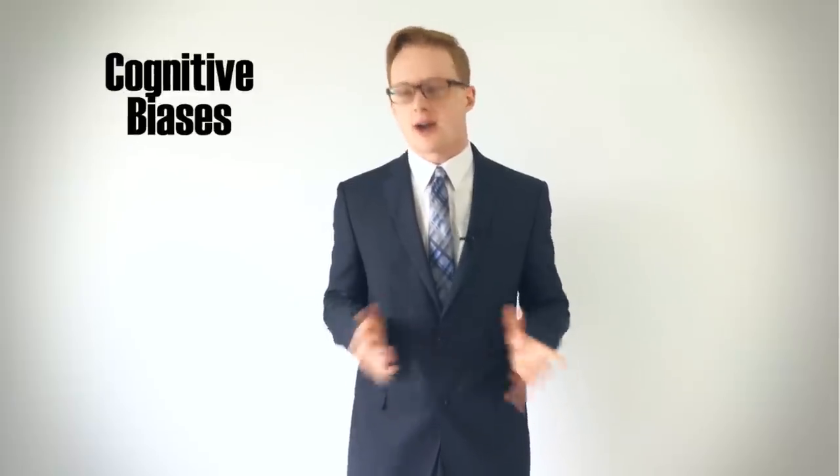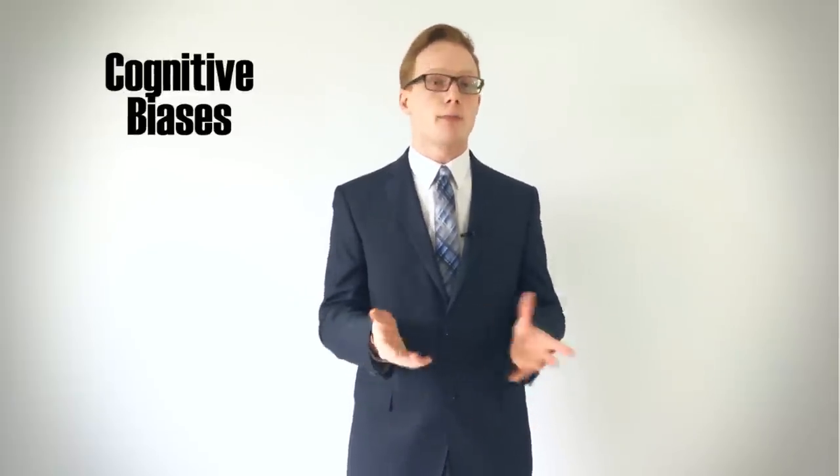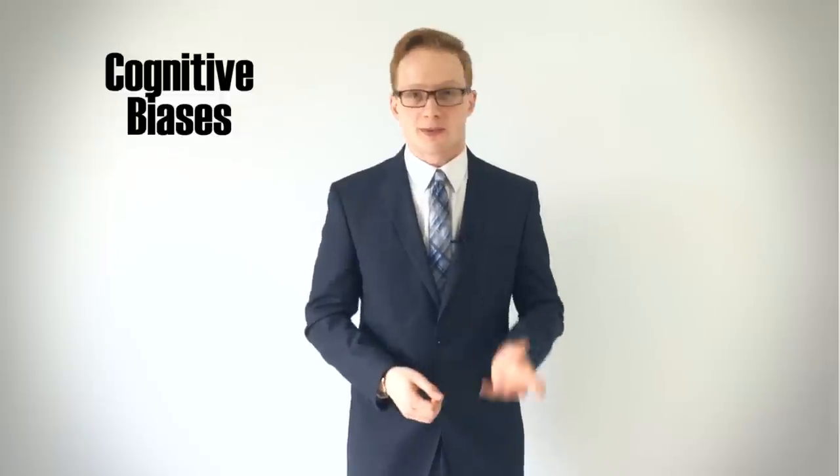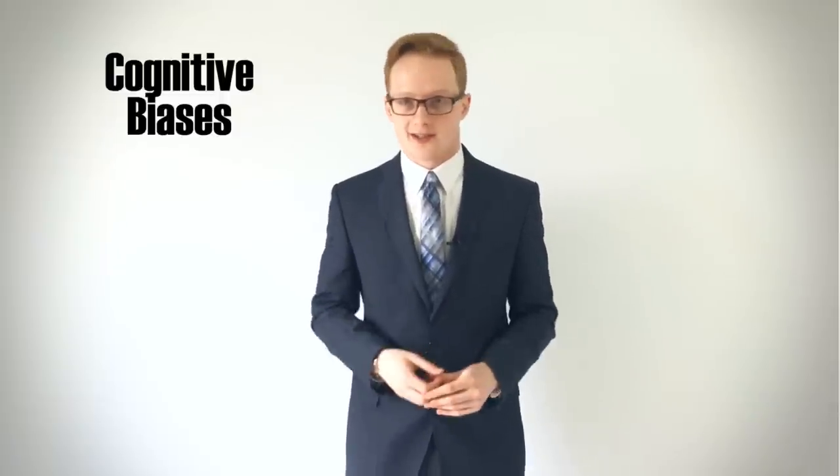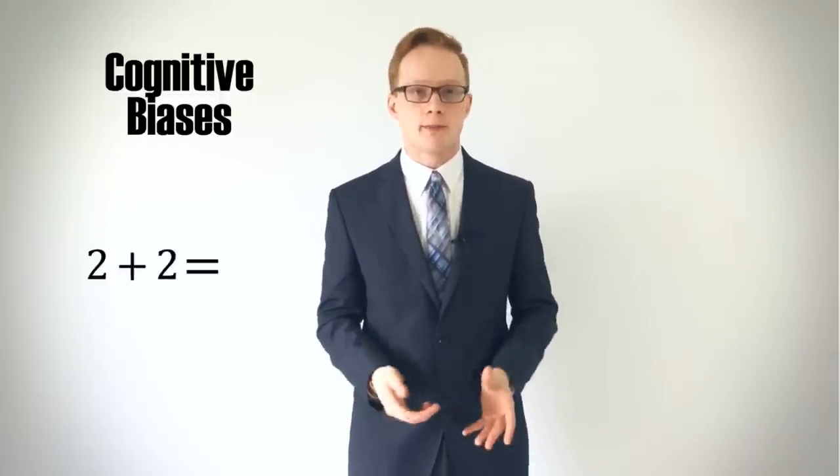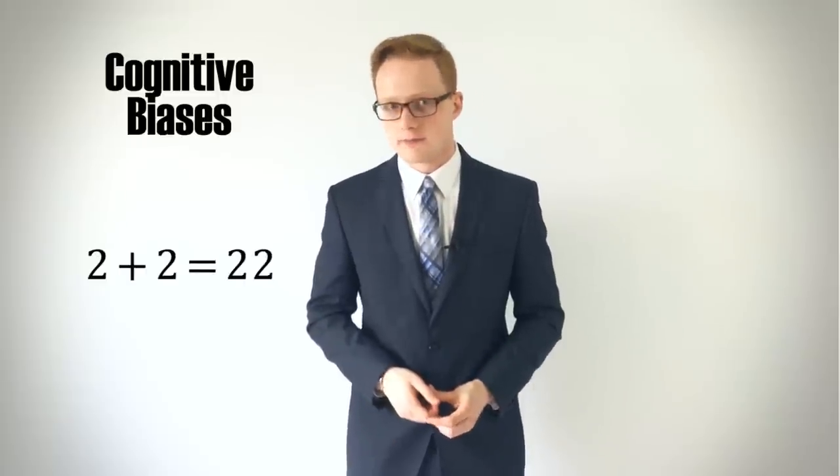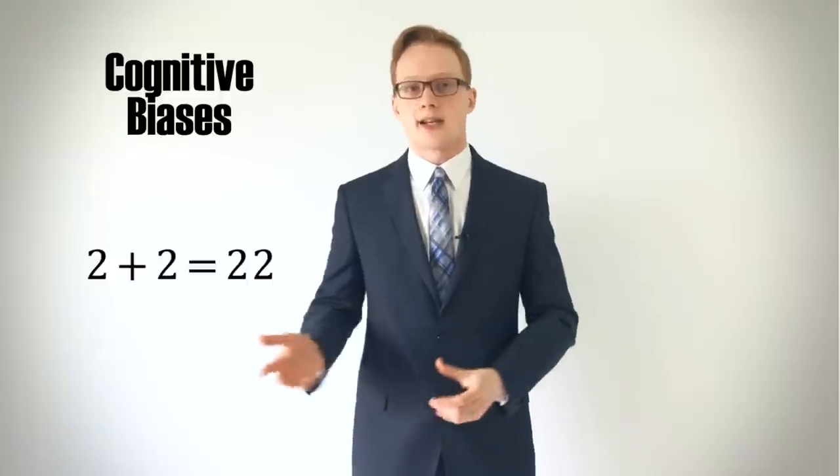At a high level, these biases fall into two categories. The first of which are cognitive biases. Cognitive biases are errors in how we process or recall information that result in faulty reasoning or analysis. Think of when you've answered a math problem but came to the wrong solution. You don't have any attachment to your answer, but at some point you forgot a rule or a step that led you astray.